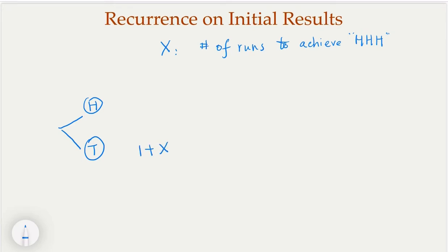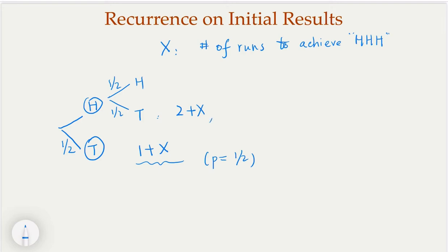Now, what is the probability that this event is happening? That's one half. So the probability here is one half for getting a tail. Now if you get a head, that's good news — you're going to have the second flip. In the second flip you still have half and half chance. If you get a tail, it's even worse than the first result because you wasted two flips. On the average, you would need two plus x steps in order to get H, H, H. And the probability of this event happening is one half times one half, which is one quarter.